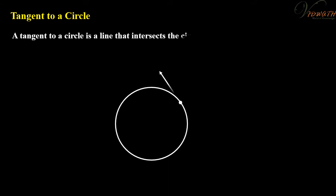Tangent to a circle: A tangent to a circle is a line that intersects the circle at only one point.